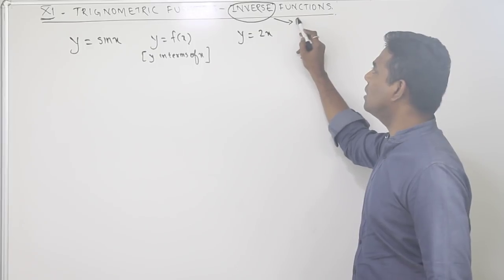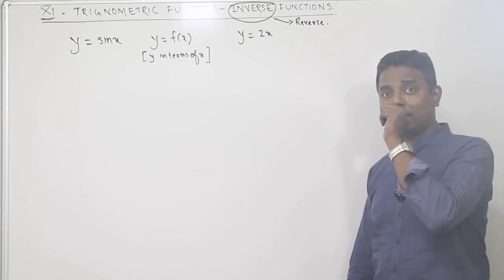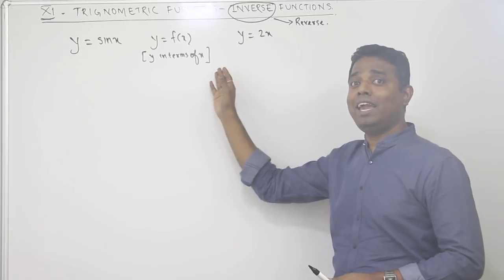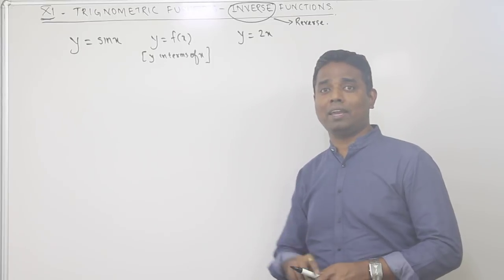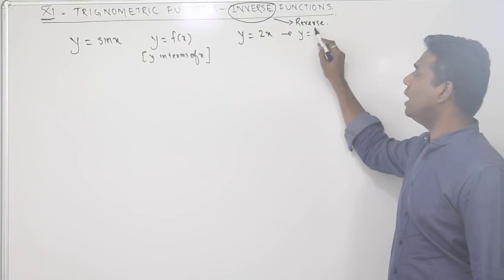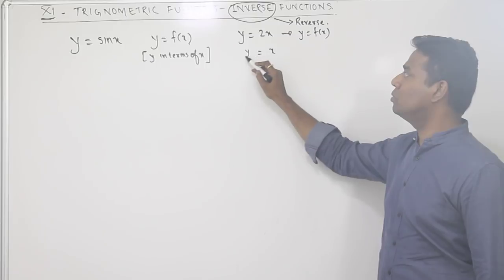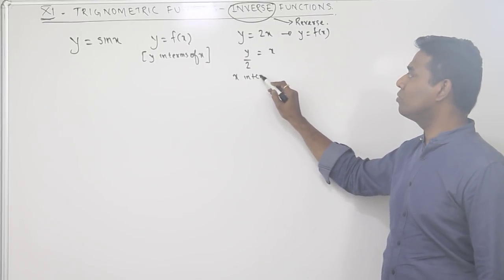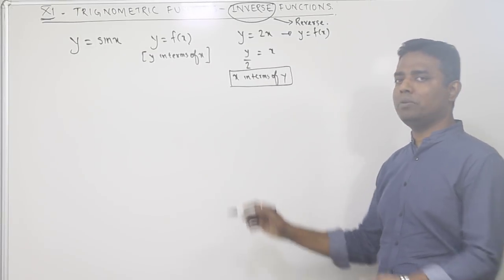Inverse means reverse. What does reverse mean here? Right now y equals 2x is a case of y as a function of x. If we reverse it, x equals y divided by 2 — that is x in terms of y. This is what we call reverse, or inverse.